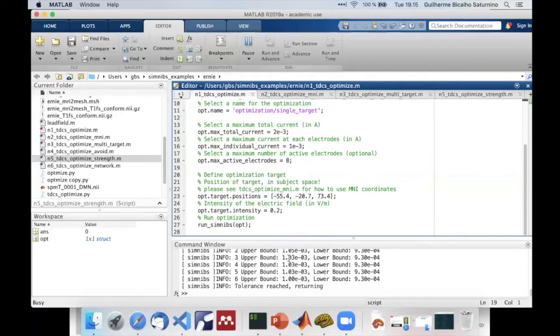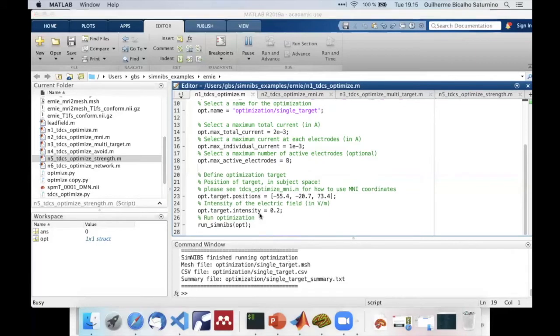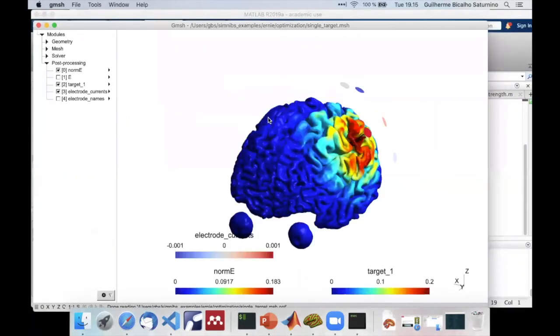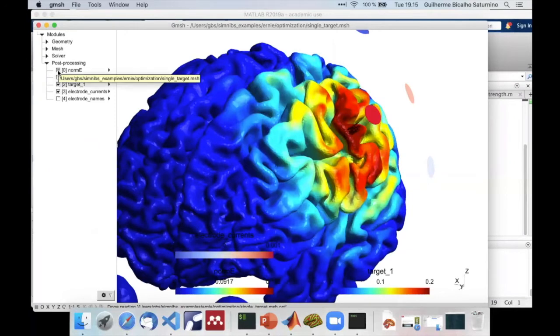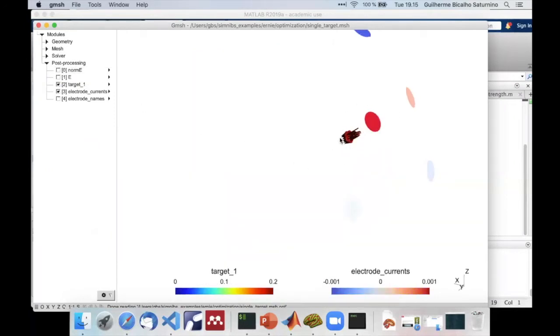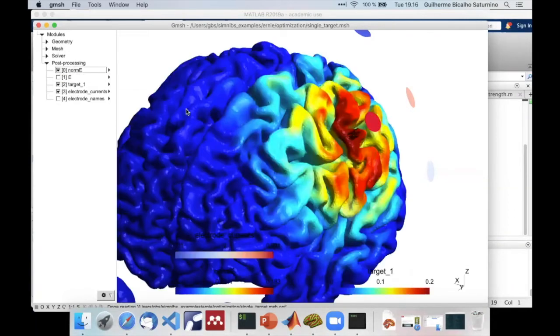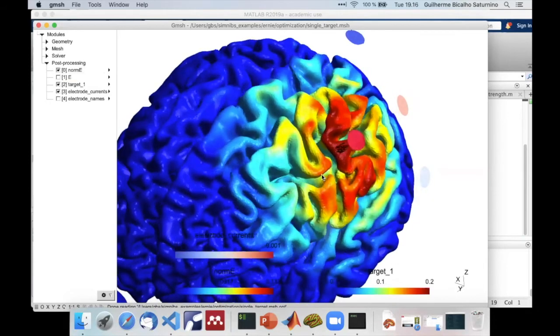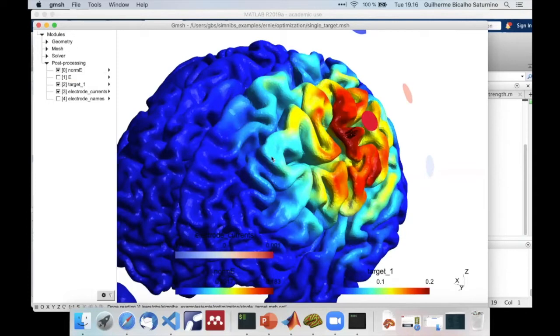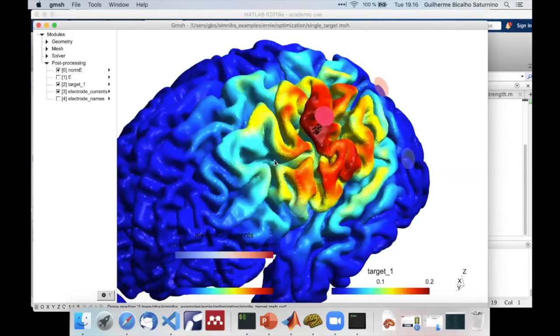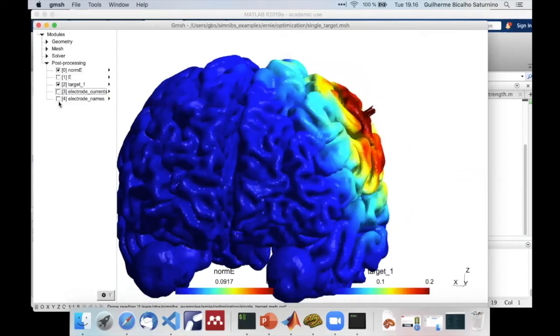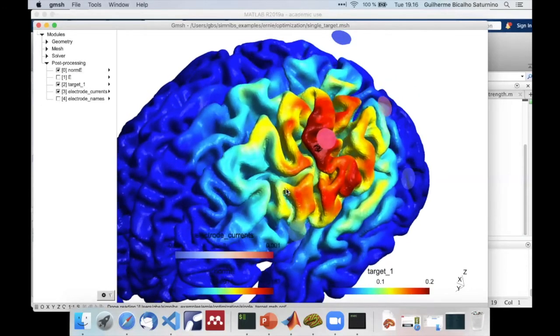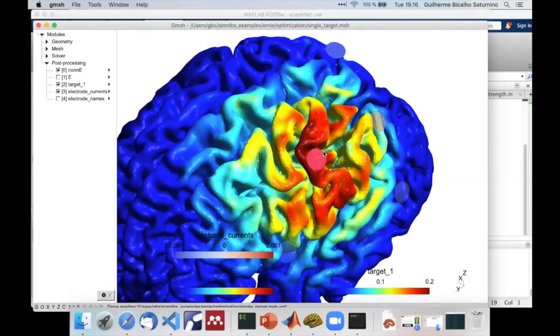Now I can run it. And it converged. And here's the result. Here we can see the target, which is both the location and direction. We have here the electric field norm in the cortex, which as you can see is more or less centered around the target region and spread out around it. I can also see the electric field vectors if I want to. And finally, I can see the electrode currents that I can use in order to create this electric field in the brain.